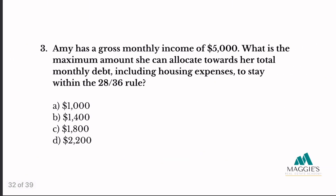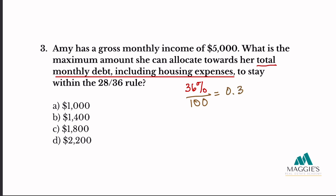Number three: Amy has a gross monthly income of $5,000. What is the maximum amount she can allocate towards her total monthly debt, including housing expenses, to stay within the 28/36 rule? Since they're asking for total monthly debt including housing expenses, I use the 36%. Convert to a decimal: 0.36. Then multiply $5,000 × 0.36 = $1,800. My answer is C.